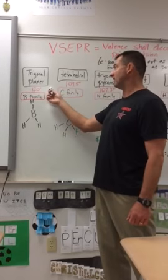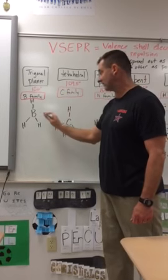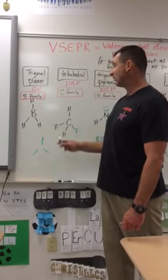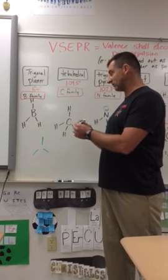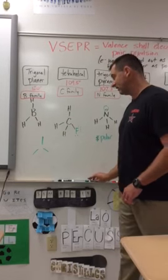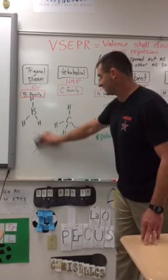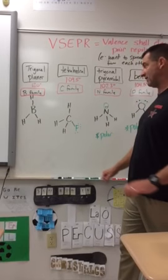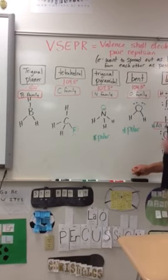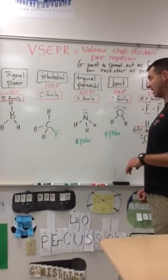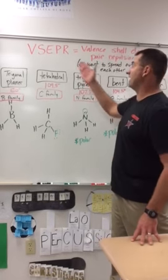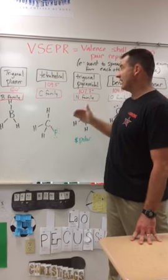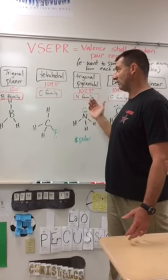And the trigonal planar is 120 degrees. It kind of looks like a Mercedes sign. It is as far away from each other as it can get. And that is also going to be polar because of the interaction, the unequal pull. Because it's being pulled in three different directions. If it was pulled in four different directions, it could have equal, but it's not. So it's important to understand the different shapes in the VSEPR model and the families that go with it.